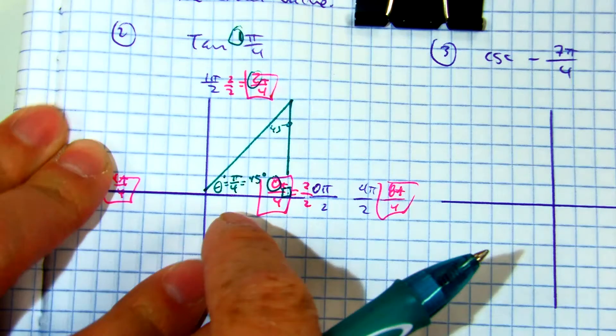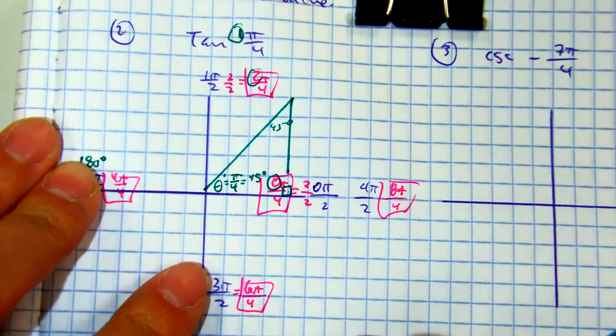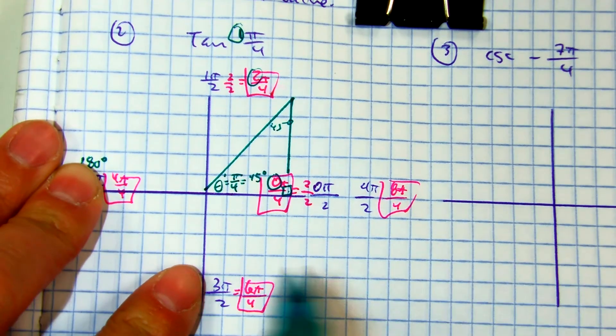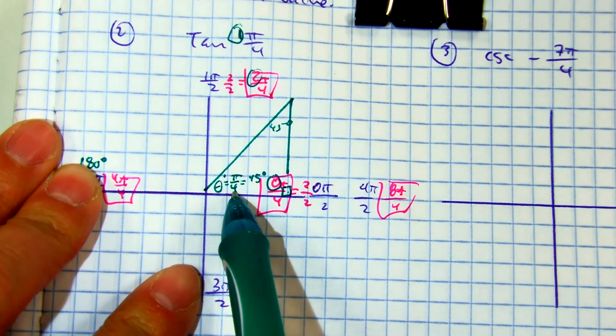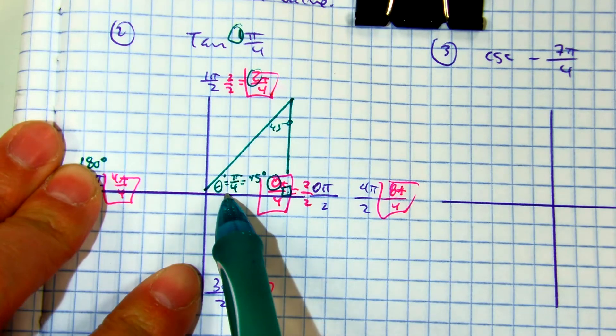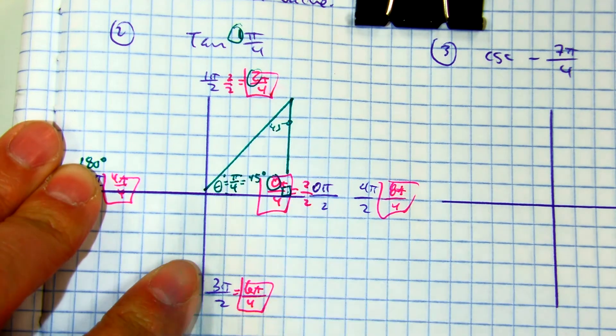Here is another trick to remember why this is a 45, 45, 90. It's a denominator of 4. 45. Okay?